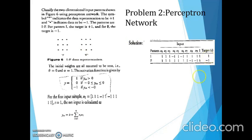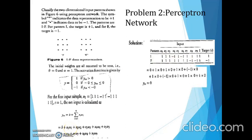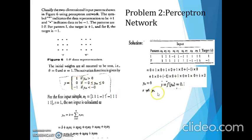All weights are initialized to 0. The x values for the 'i' sample are: 1, 1, 1, -1, 1, -1, 1, 1, 1. The total net input will be 0. Applying the activation function, y = f(y_in) = 0. The target is 1 but calculated output is 0, so they are not equal — we have to update the weight. Applying the formula w_new = w_old + α·t·x1: old is 0, alpha is 1, t is 1. So w1=1, w2=1, w3=1, w4=-1, w5=1, w6=-1, w7=1, w8=1, w9=1. Bias_new = 0 + 1·1 = 1.